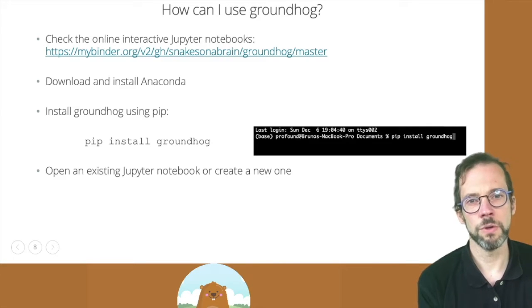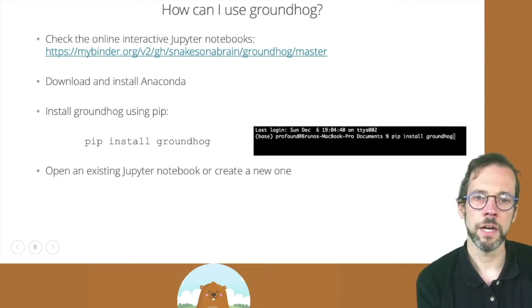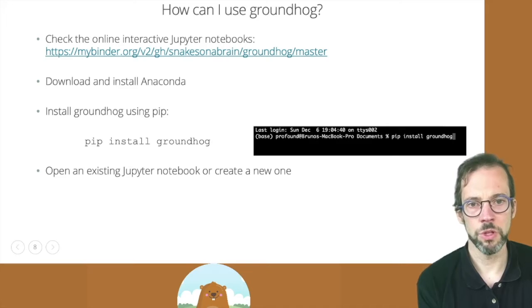But if you want to use Groundhog on your own system, you're going to need a Python installation. And I recommend using the Anaconda installers because they come packed with a lot of pre-existing packages and functionality. Groundhog is not included in Anaconda by default, so you'll have to install it using pip. And you can simply type in the command pip install groundhog in a command prompt or a terminal window.